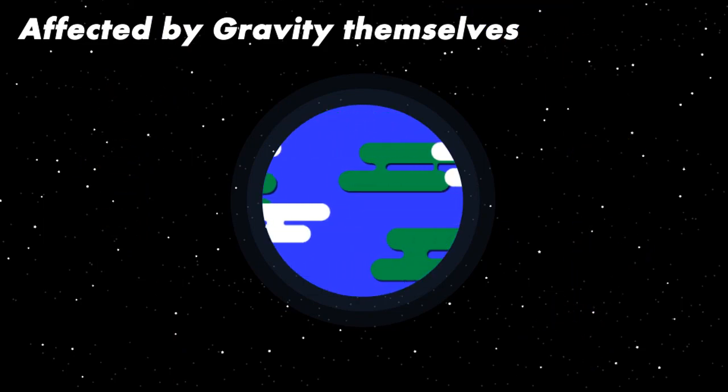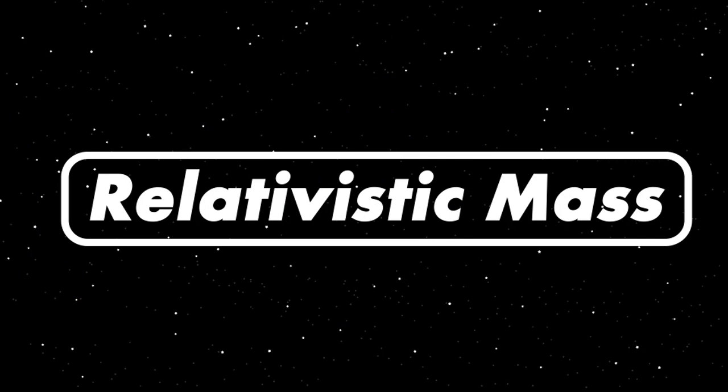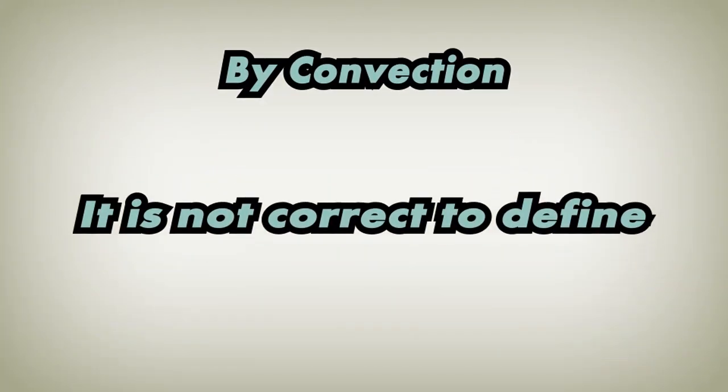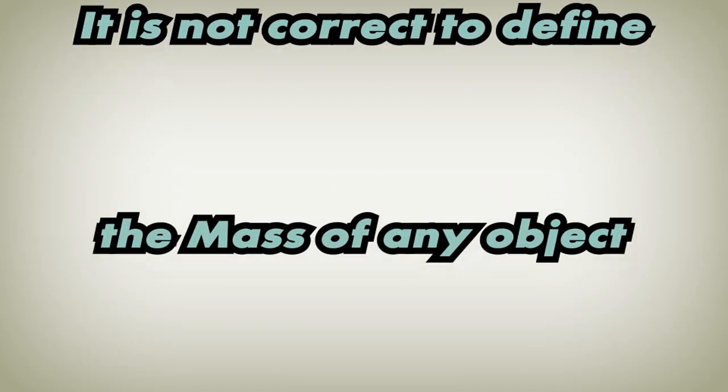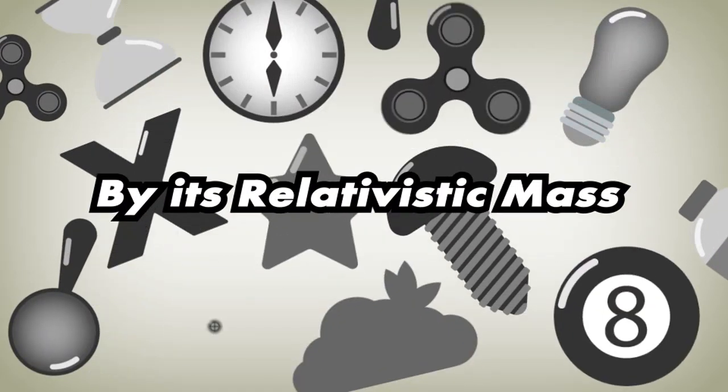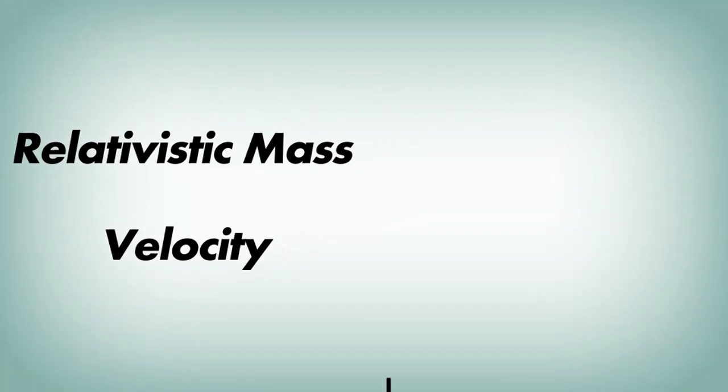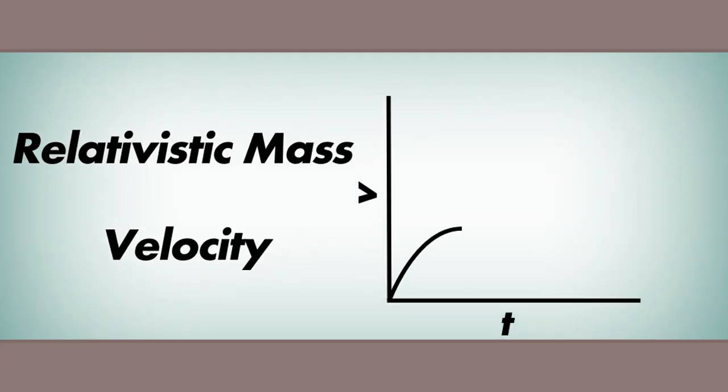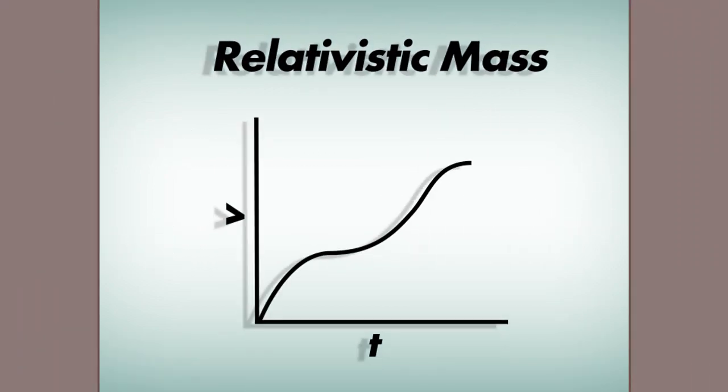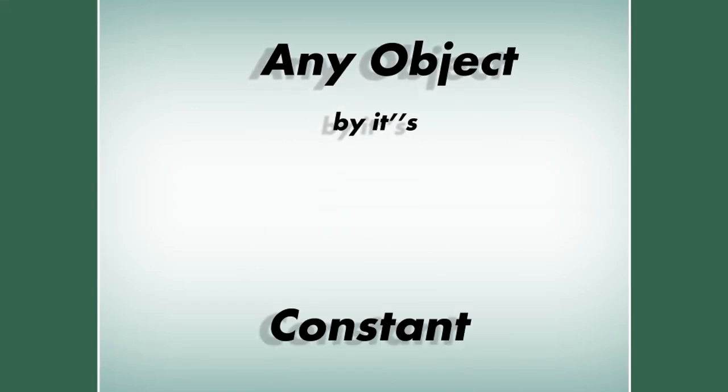And now the question arises, if the photons do have relativistic mass, then why do we say that they are massless? It is because, by convention, it is not correct to define the mass of any object by its relativistic mass, as it depends on the velocity of the object, which can of course change. Therefore, instead of having a changing relativistic mass, we prefer to define the mass of any object by its constant rest mass.